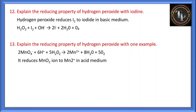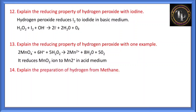Another example of reducing property of H2O2: with MnO4⁻ (permanganate), MnO4⁻ is converted into Mn2+. In MnO4⁻, the oxidation state of Mn is +7; in Mn2+ it is +2. From +7 to +2, five electrons are added, so the oxidation state decreases — this is reduction. Therefore, H2O2 acts as a reducing agent in this reaction also.